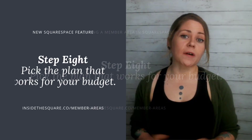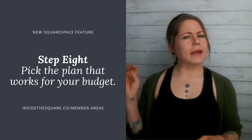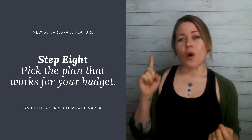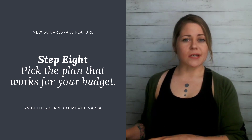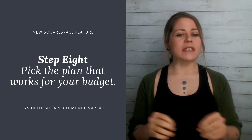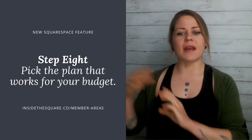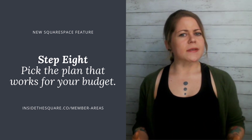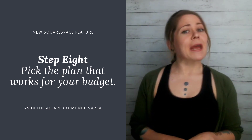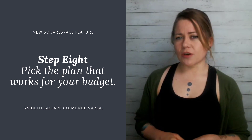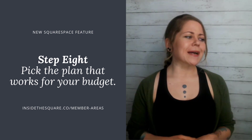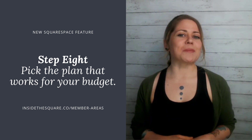Step number eight: pick the plan that works for your budget. You can pay monthly or annually, and I believe they have three different levels at the time of recording. I only needed one membership section in customcodeacademy.com, but I did the math: paying a 7% transaction fee for one student would be an extra $14.37 versus the 4% transaction fee in the next price tier. The difference in price was only $10 a month, so as long as I get at least one student a month, it pays for itself. It might be more cost effective to pay for something with a lower transaction fee.